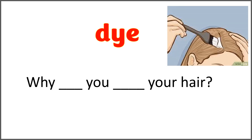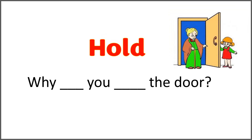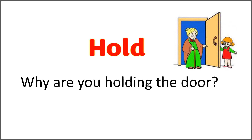The given word is 'die,' and the sentence is 'why blank you blank your hair?' Use the word 'die' with 'are' to complete the sentence. Why are you dying your hair? The given word is 'hold,' and the sentence is 'why blank you blank the door?' Use the word 'hold' with 'are' to complete the sentence. Why are you holding the door? Of course, to help the grandma.